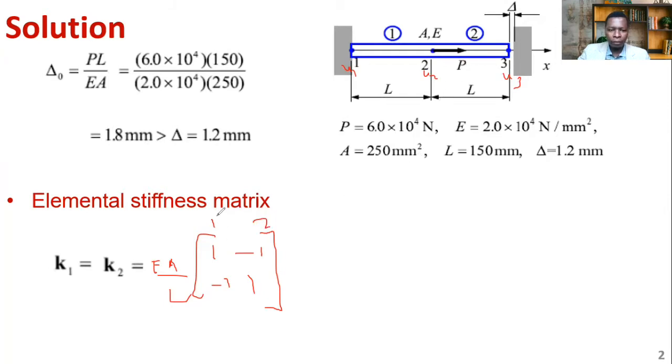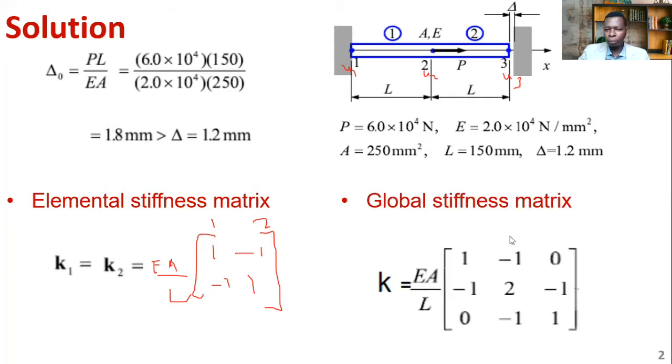By the principle of superposition, due to the compatibility principle that the two nodes remain connected, then we can go straight ahead and assemble that to get what is the global stiffness matrix. This is the assembled stiffness matrix, superposition of the two elements.